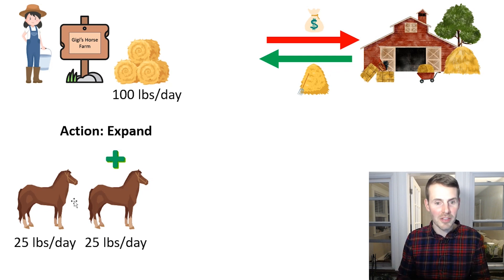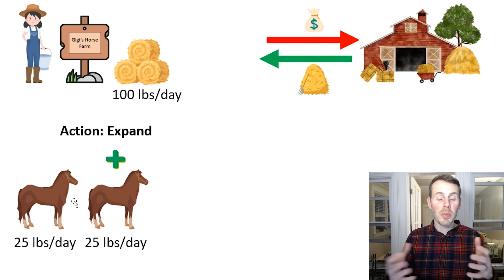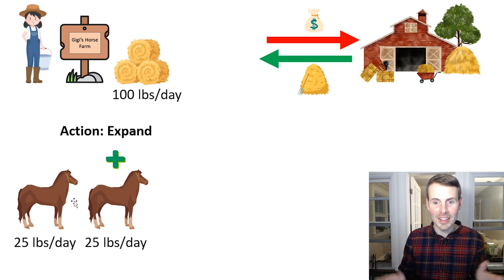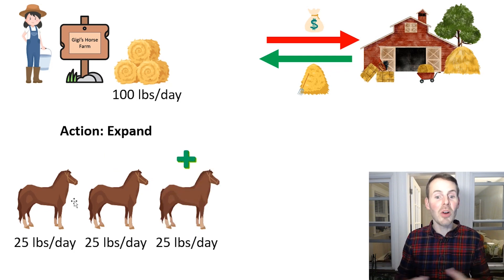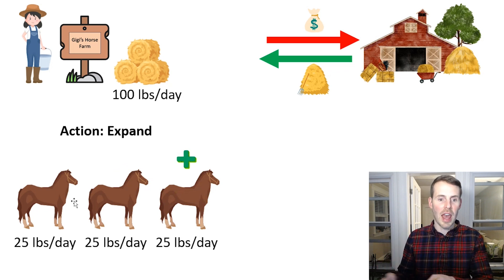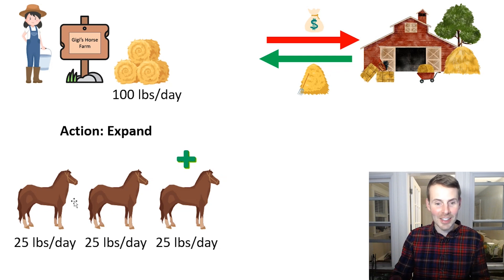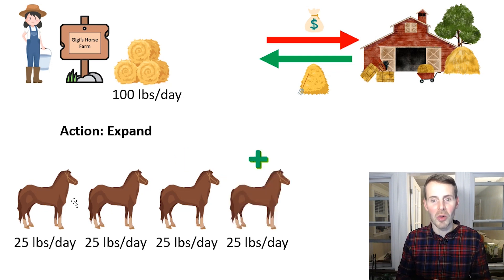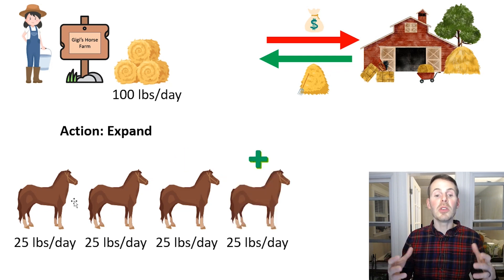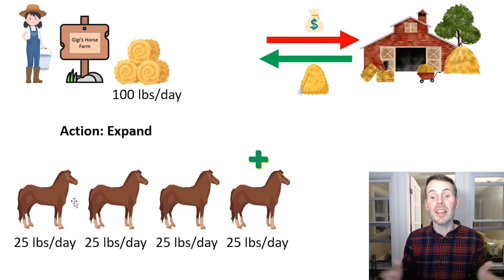She's using 50 pounds of hay per day but has 100 pounds in total available. The next logical thing to do, she adds another horse to her fleet. She now has three horses giving sleigh rides every day, and she still has extra hay. Her three horses only consume 75 of the 100 pounds of hay delivered each day from the hay farm. So she adds another horse to her fleet, and she is now using all of the hay that gets delivered on a daily basis.